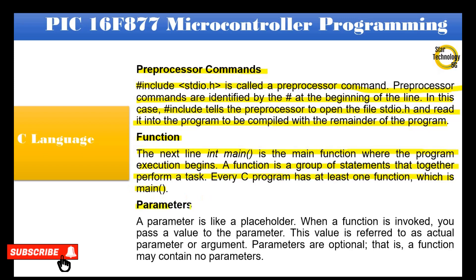A parameter is like a placeholder. When a function is invoked, you pass a value to the parameter. This value is referred to as an actual parameter or argument. Parameters are optional — that is, a function may contain no parameters.